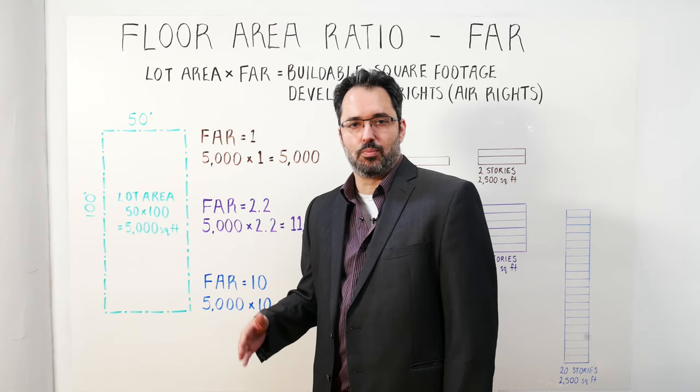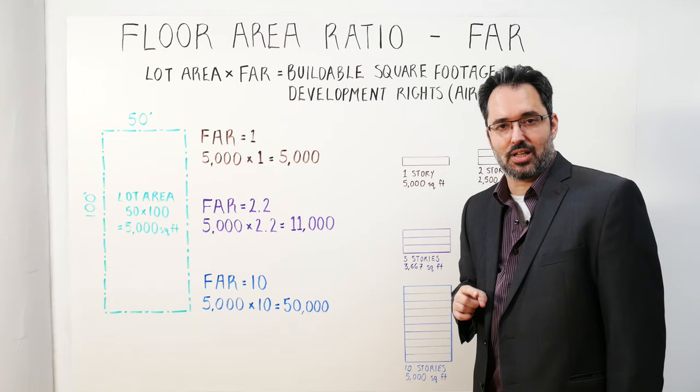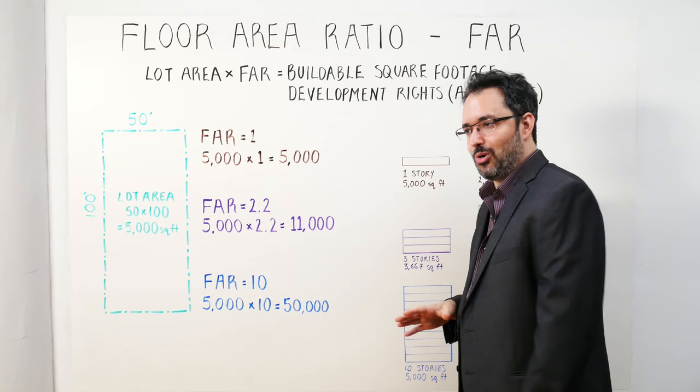Floor area ratio, also known as FAR, is one of the basic premises of zoning. The first thing I really want to tell everyone is this is pronounced F-A-R, not FAR. Professionals always say FAR.